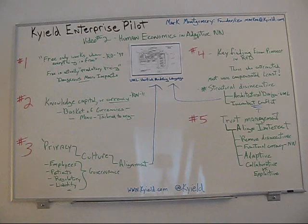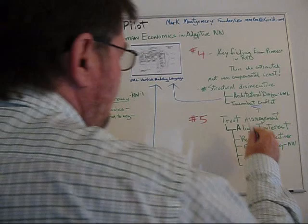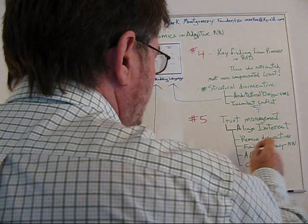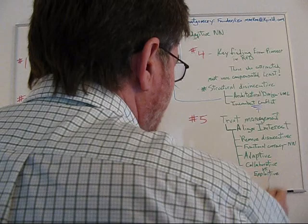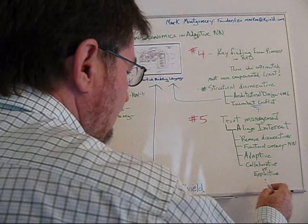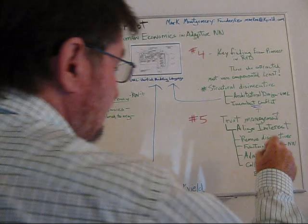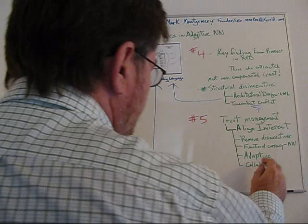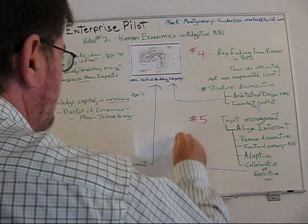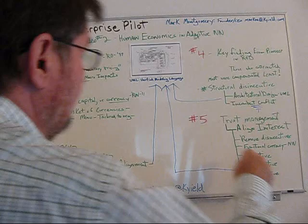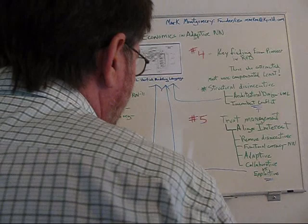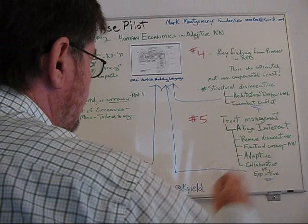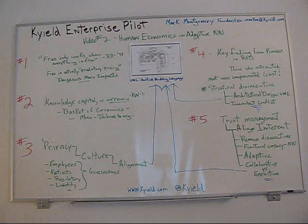Number five: trust management. It's all about trust — if you don't have trust, you don't have much of anything. We need to manage trust, align interests, remove disincentives, and provide functional currency. It needs to be adaptive, and we need to get to a point where it's collaborative versus exploitive. You don't see that in so-called open innovation because the architecture doesn't exist in most cases to overcome this problem. When it's too exploitive, the enterprise starts to lose good people and support throughout the global economy — and that goes back again to architecture.